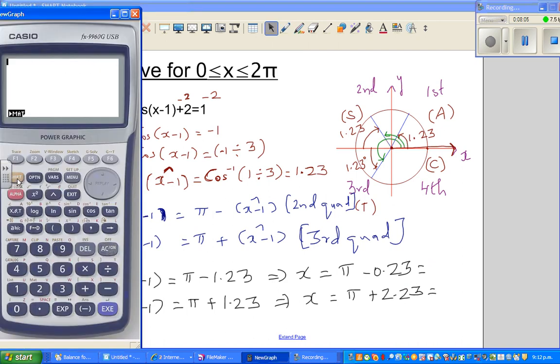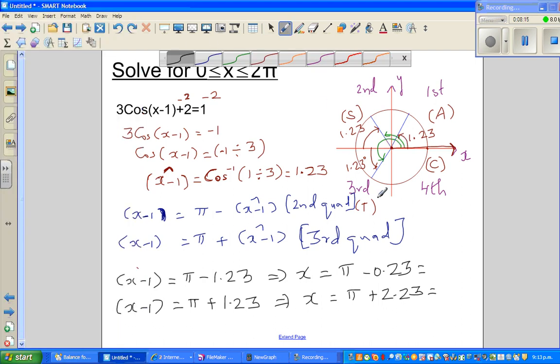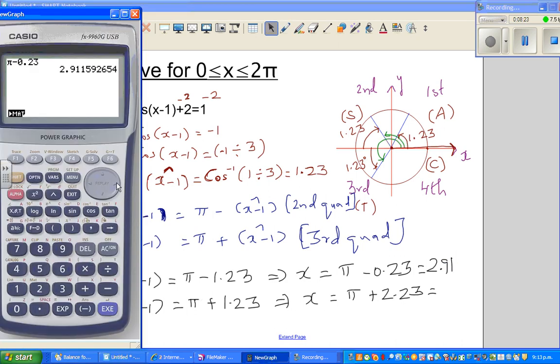So cancel, shift π minus 0.23, which is 2.91. So that's the one answer, which is 2.91.